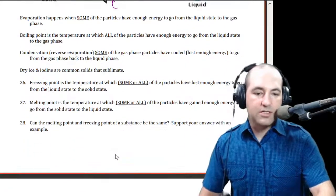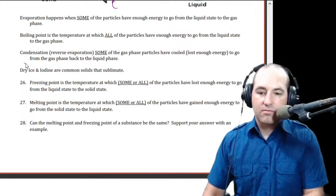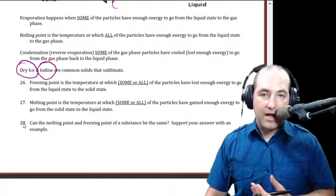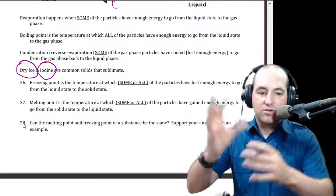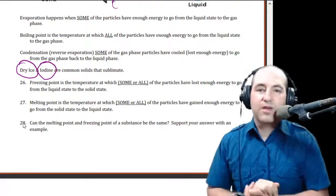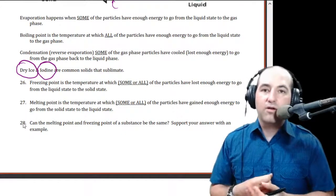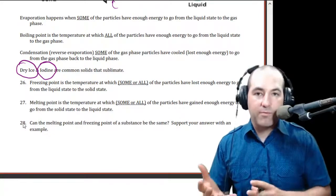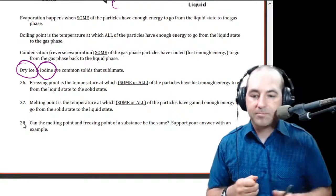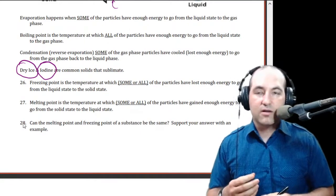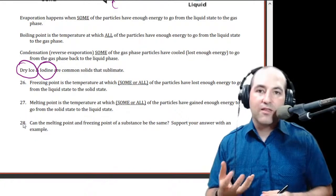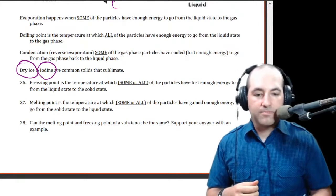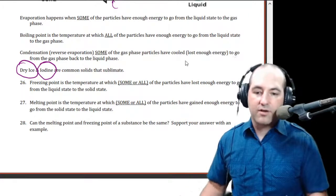The classic examples of sublimation and deposition we'll see in lab are dry ice and iodine. Dry ice is solid carbon dioxide — if you leave it out it kind of exudes all that smoke, going directly to carbon dioxide gas. The smoke actually isn't carbon dioxide because carbon dioxide is colorless; the smoke is condensing water vapor on the very cold dry ice. Iodine is a purple solid that sublimates to a purple gas and doesn't really melt. So does sublimation require energy or give off energy?